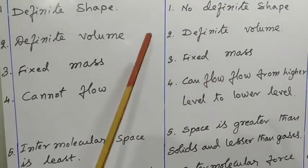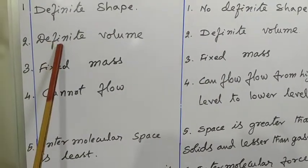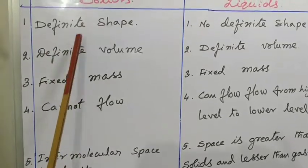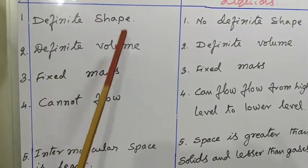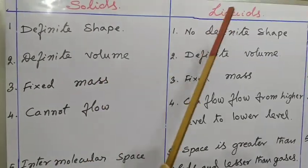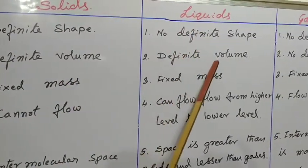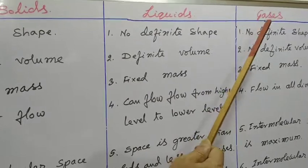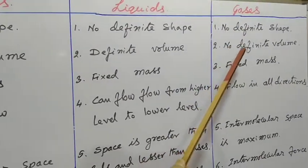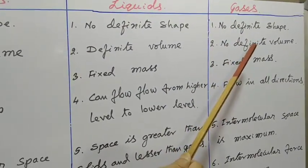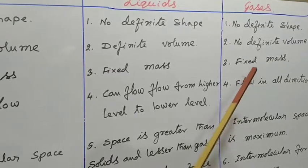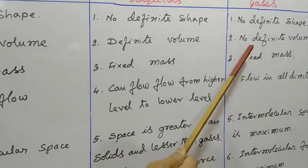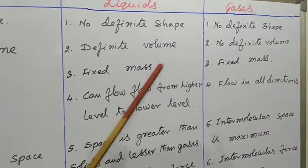The second property, definite volume. Solids are having definite volume. Liquids having definite volume. And gases having no definite volume because they can spread throughout the room, so they are not having definite volume.